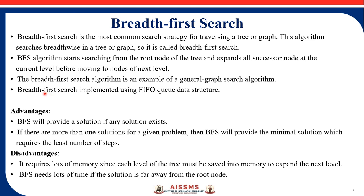BFS is an example of a general graph search algorithm that uses a FIFO queue data structure — First In First Out, meaning whichever node enters first comes out first. Advantages: it will provide a solution if any solution exists, and if there are more than one solutions, BFS provides the minimal solution requiring the least number of steps. Disadvantage: it requires a lot of memory since each level of the tree must be saved in memory to expand the next level.